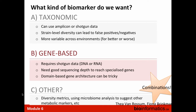What kind of biomarker do we want? A taxonomic biomarker uses amplicon or shotgun data, but strain diversity can lead to false positives and false negatives — if a strain has diverged, your biomarker may not recognize it. Taxonomy-based approaches also depend heavily on the environment; a soil sample is far more diverse than a deep-sea or kimchi sample, complicating the identification of suitable taxonomic markers.